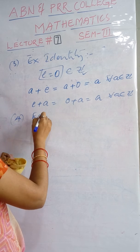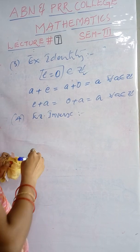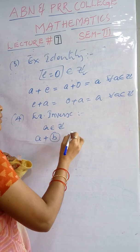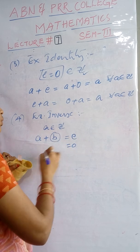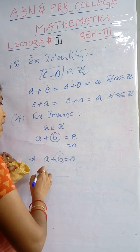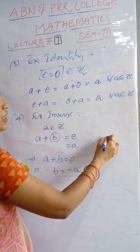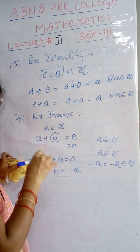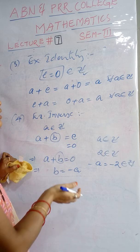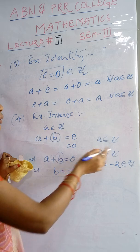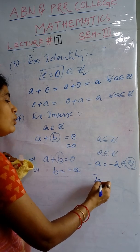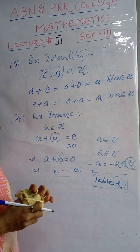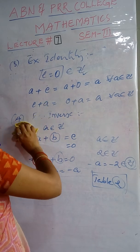The fourth property is existence of inverse. For any element a in the integers, we need an element b such that a + b = 0 (the identity). Then b = −a. If a = 2, then −a = −2, which is again an integer. Negative integers are in Z but not in the set of whole numbers, which is why the set of whole numbers is not a group. The set of integers is the first example of a group. You may refer to table 2 in your notes for several more examples.